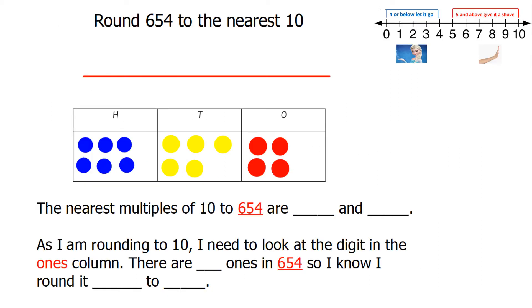We're going to look at 2 examples. One where we're rounding a 3-digit number to its nearest 10, and then one where we're rounding a 4-digit number to its nearest 10.